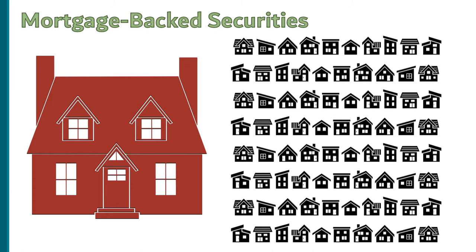The bigger the pool of mortgages, the more certain you can be about how many people will default and not pay you back. You might know that two or three percent will default, so you'll lose two to three percent of your money — but you'll also know it won't be more than that. Pooling risk together reduces the overall risk, and that reduces the interest rate.